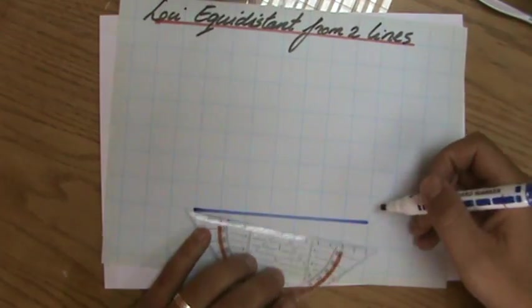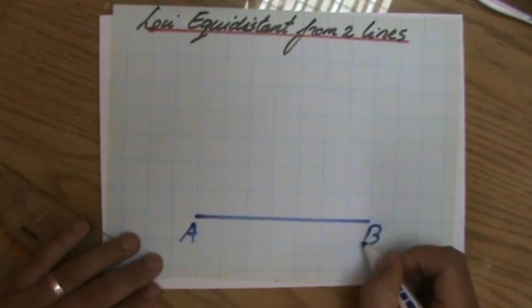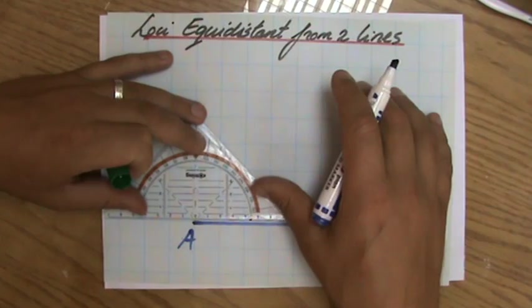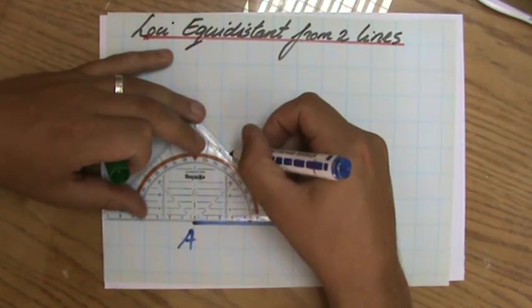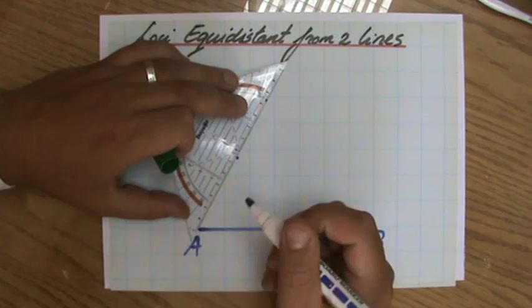Now, let's say I have the line AB over there, and I'll make another line, let's say with an angle of 60 degrees AC.